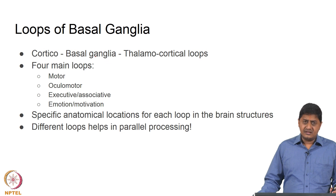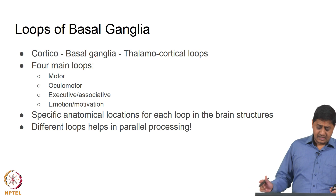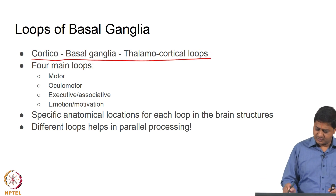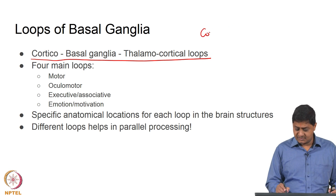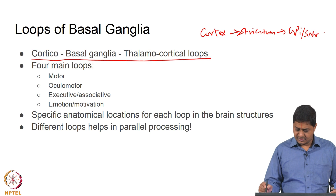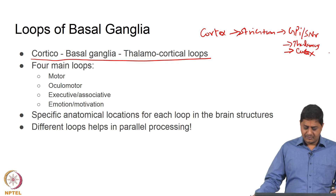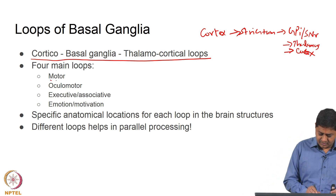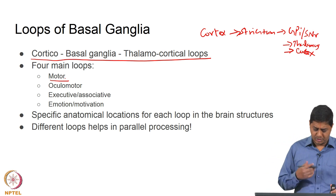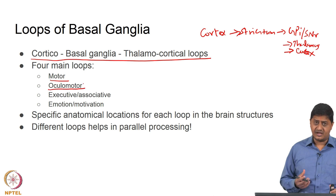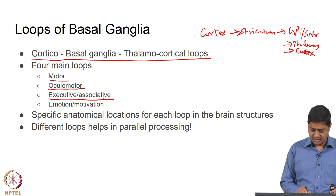In general, the loops involving the basal ganglia are the cortico-basal ganglia thalamocortical loops. Basically the input starts from the cortex, goes to the striatum, goes to GPi, goes to GPi or SNr, and from there to the thalamus, and from there back to the cortex. This manifests in four major loops: the motor or skeletomotor loop, the oculomotor loop involving eye function, the executive and associative loop, and the emotional motivation or limbic loop.